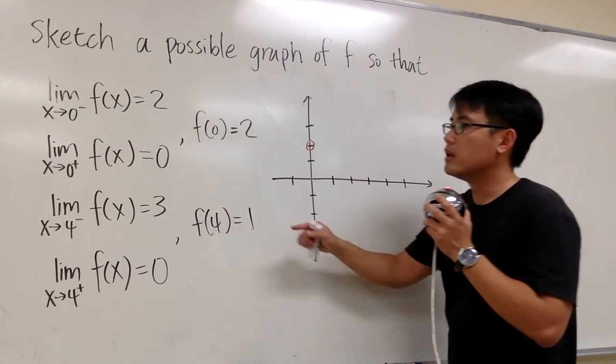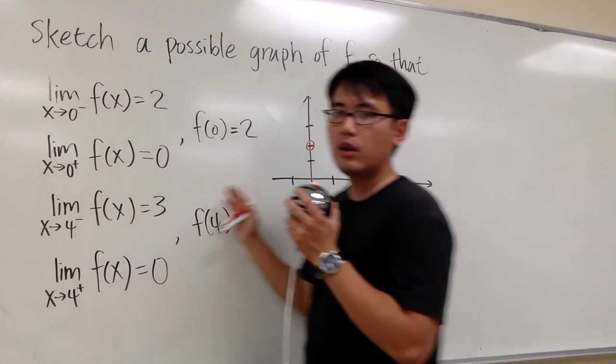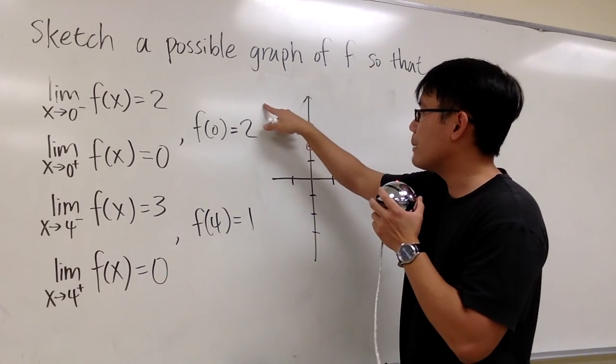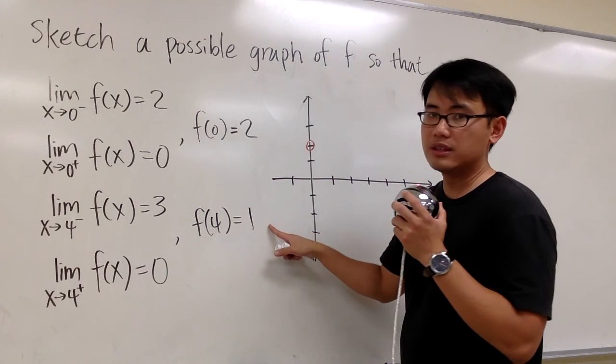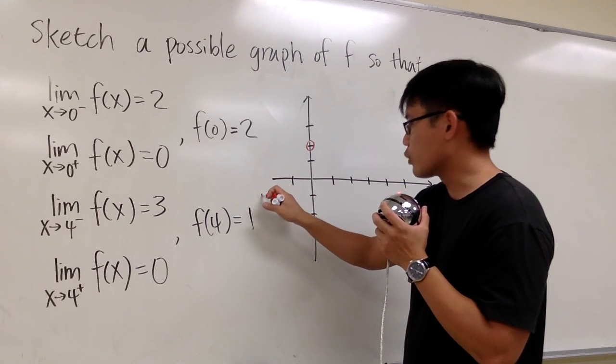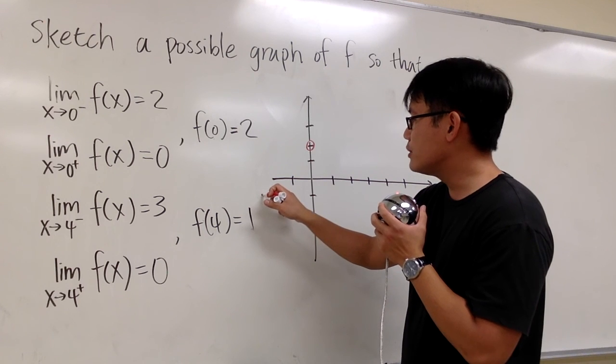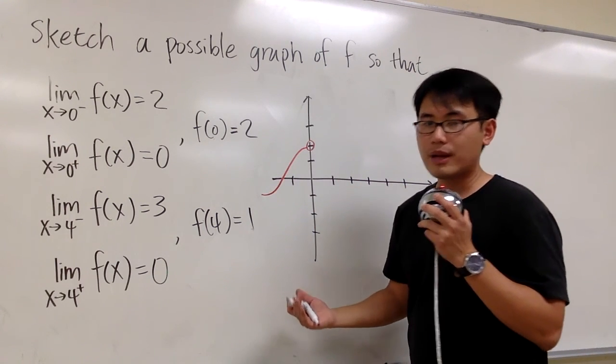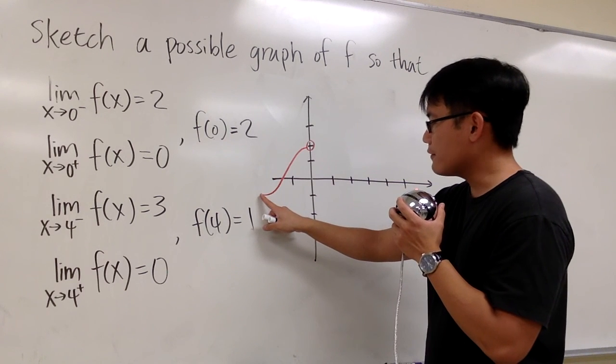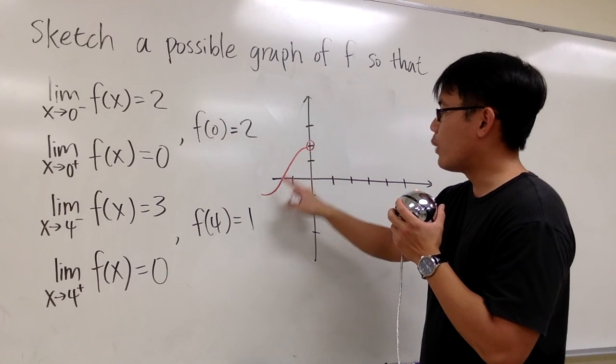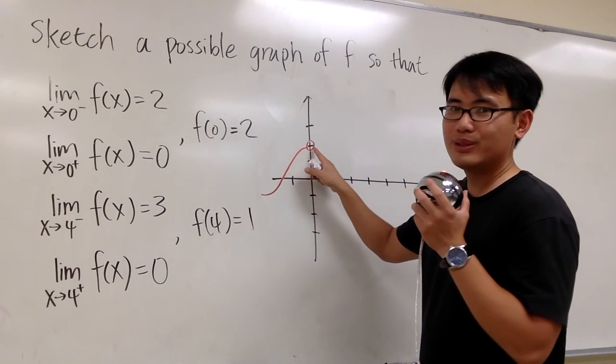And then, we are going to start from the left-hand side of zero. And it doesn't really matter how the graph should look like. I can start a graph up here, or right here, or down here. It doesn't matter. It has no restriction on that. So let me just say, I want to start a graph right here. And then, I'm just going to go hit the open circle. That's all, right? You see, when the graph is approaching to x is equal to zero from the left-hand side, the y value is approaching to two.